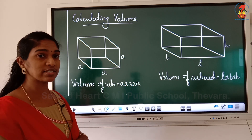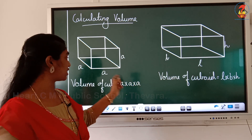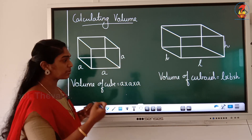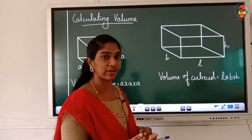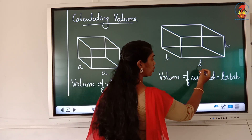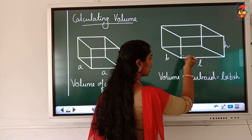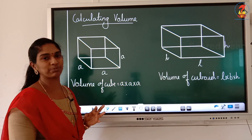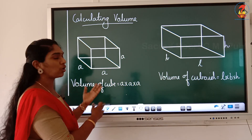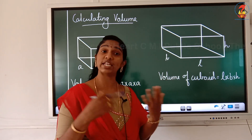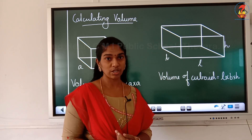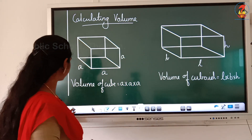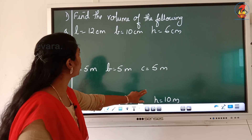To find the volume of a cube, we multiply a × a × a, which is length × breadth × height. For a cuboid, since all sides can be different, we multiply length × breadth × height. The key difference is that for a cube all sides are equal, while for a cuboid the sides can be the same or different. This is how you find the volume of a cube and a cuboid. Now let's do some questions.